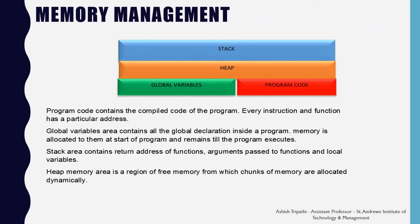There are basically four sections of memory referenced by a C++ program: stack memory, heap memory, global variable memory and program code memory. The program code memory contains the compiled code — every instruction and function has a particular address. The global variable area contains all global declarations, allocated at the start of the program and remaining until the program executes. The stack area contains the return address of functions, arguments passed to functions, and local variables. The heap memory area is a region of free memory from which chunks are allocated dynamically, used when creating new objects or using malloc or realloc.